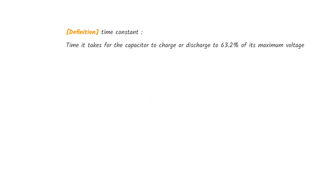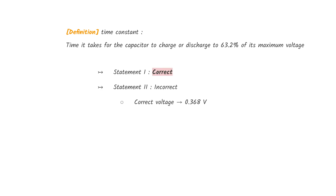The time constant is the time taken for the capacitor to charge or discharge to 63.2% of its maximum voltage. This makes statement one correct and statement two incorrect. For statement two to be correct, the voltage should be 0.368 volts. Statement three is also correct, as this equation is given in the data booklet.